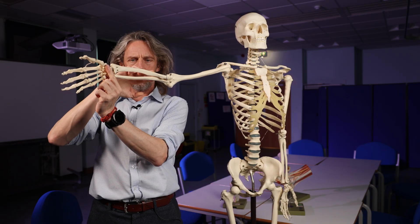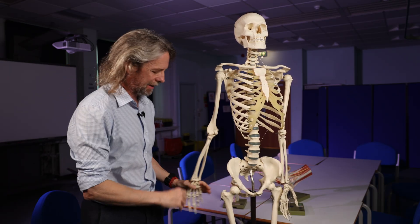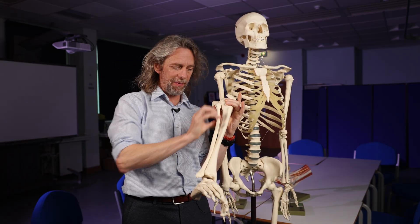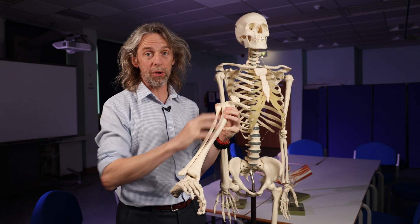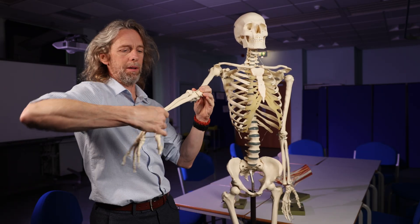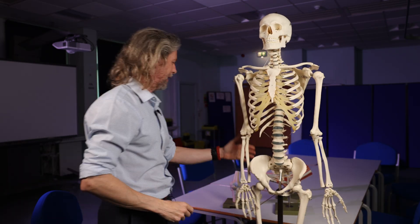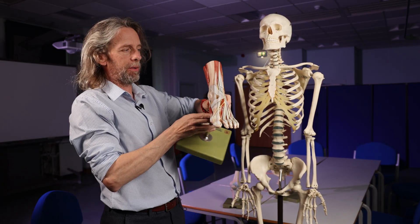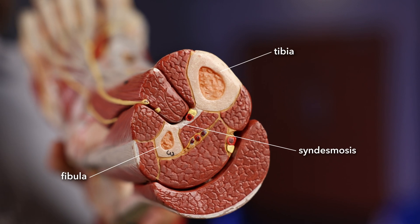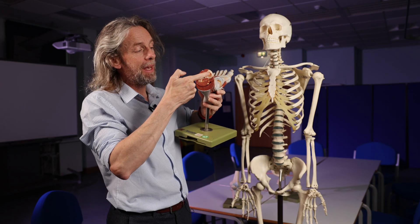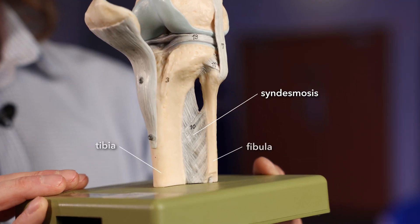Another fibrous joint is the syndesmosis — between the ulna and radius, this gap is filled with a fibrous sheet. We see the same thing between the tibia and fibula. On this model of the foot, cutting a transverse section through the leg, you can see the two bones and the fibrous sheet between them, which also helps create separate compartments within the leg and provides attachment sites for muscles.